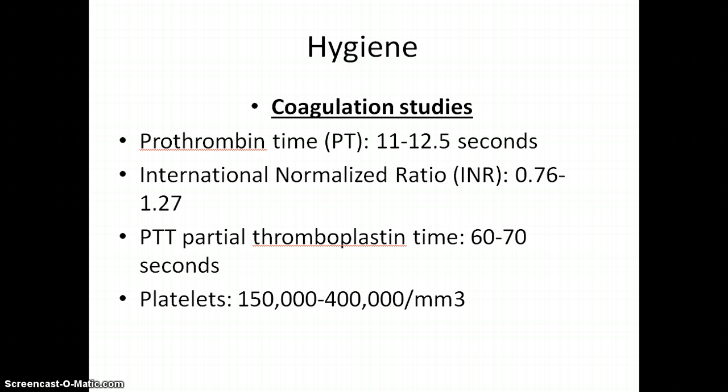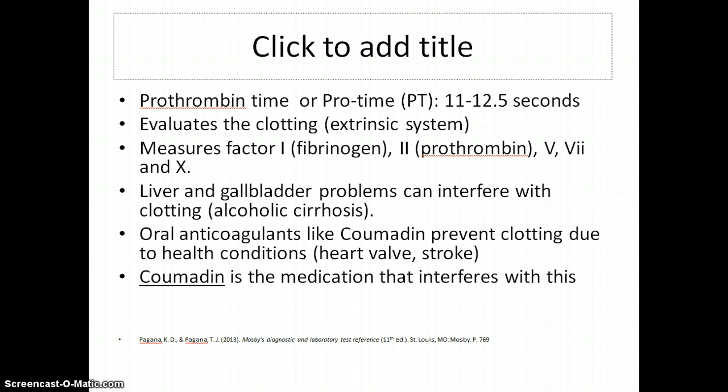In our hygiene unit we'll be looking at coagulation or bleeding studies, since during hygiene we might notice or cause bleeding. The lab values that go with this are your prothrombin time or PT, INR or international normalization ratio, your PTT or partial thromboplastin, and platelets. The PT is about 11 to 12.5 seconds for a clot to form and it looks at the extrinsic system, examining clotting factors from the liver.